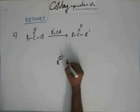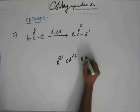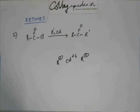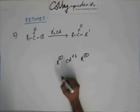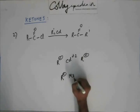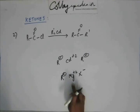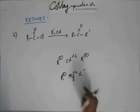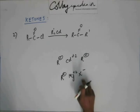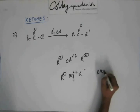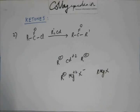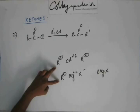Dialkyl cadmium is structured such that cadmium has a two-unit positive charge and each alkyl group has one unit of negative charge. This is similar to the Grignard reagent, where you have one unit of negative charge on the R group, a two-unit positive charge on magnesium, and one unit of negative charge on the halogen — written as RMgX. In both dialkyl cadmium and Grignard reagent, the reacting part is R⁻, because the negative charge on carbon is unstable, making it effectively the part that goes for reaction.